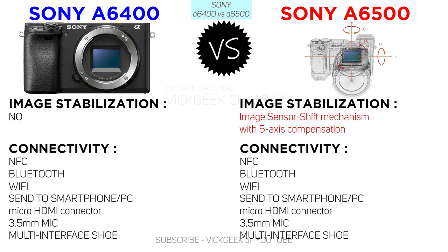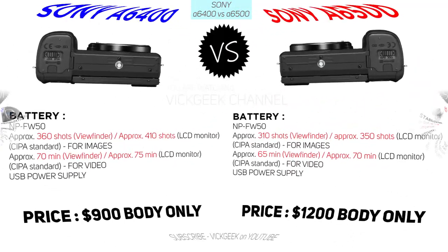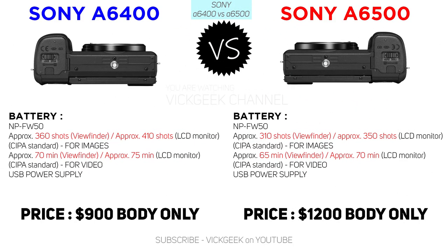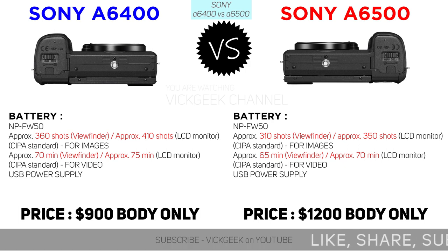About connectivity, both cameras support similar features: a 3.5mm mic input, no headphone jack on either, NFC, Bluetooth, Wi-Fi, and a micro HDMI connector. The final differentiator is battery life — although both cameras use the same NP-FW50 battery, the a6400 delivers more shots per charge and more minutes of recording than the a6500.